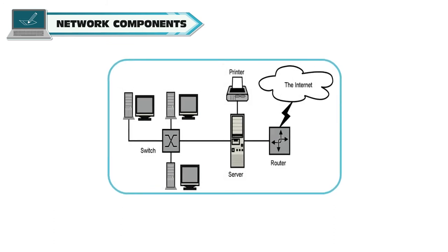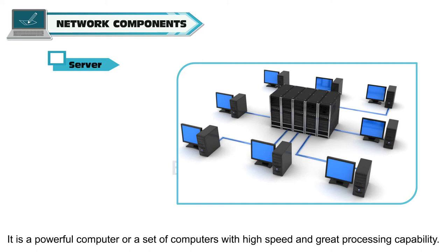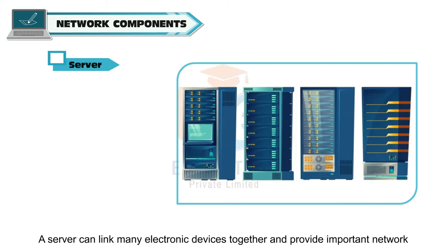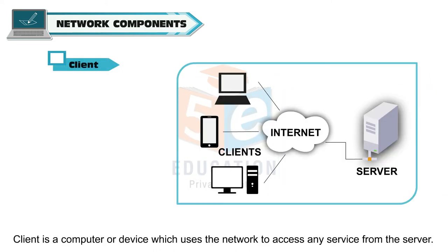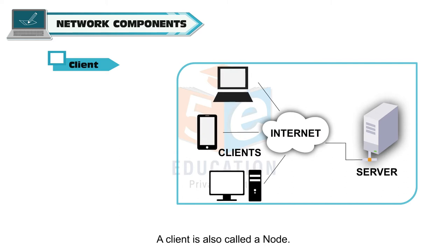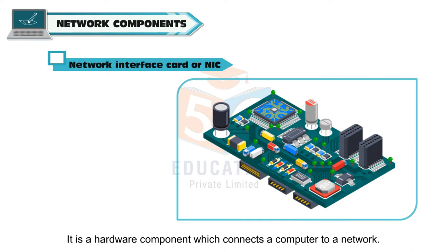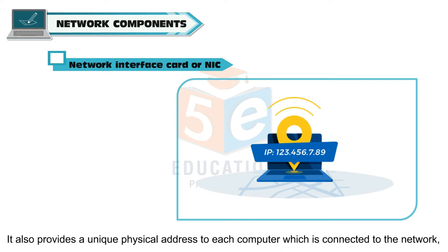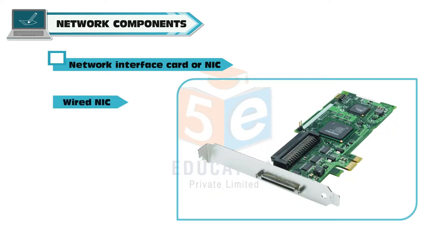Network components: every network includes these components to form a computer network. Server: it is a powerful computer or set of computers with high speed and great processing capability; a server can link many electronic devices together and provide important network services to private and public users. Client: a computer or device which uses the network to access any service from the server; a client is also called a node. Network Interface Card or NIC: it is a hardware component which connects a computer to a network. It provides a unique physical address to each computer known as MAC, which stands for Media Access Control Address. There are two types of NICs: Wired NIC and Wireless NIC.